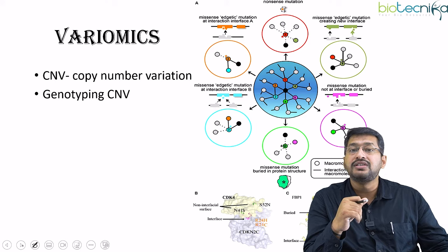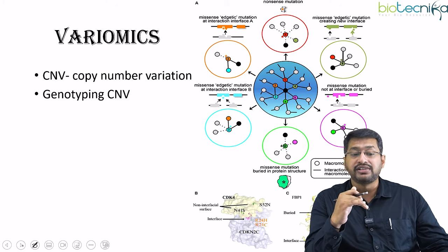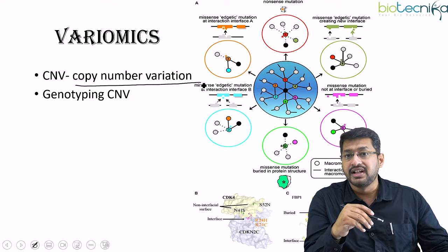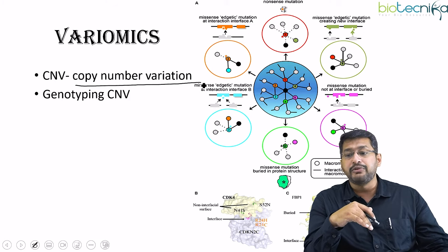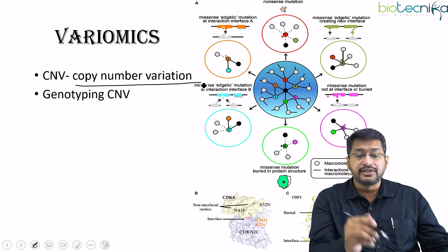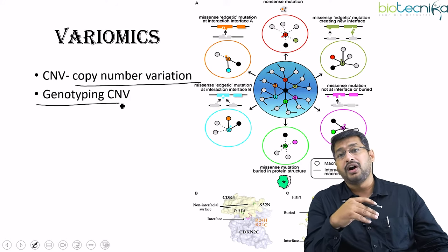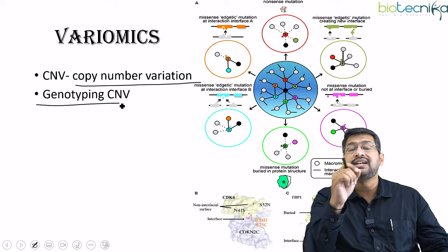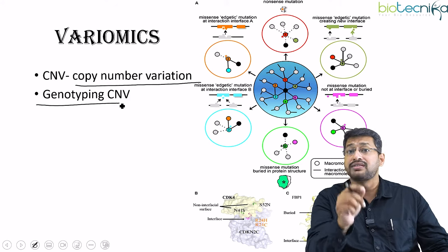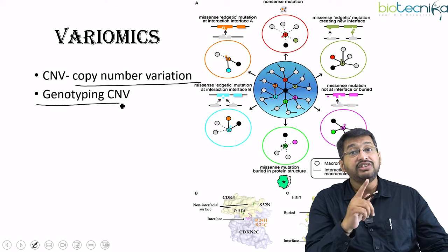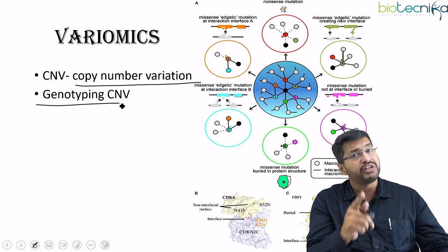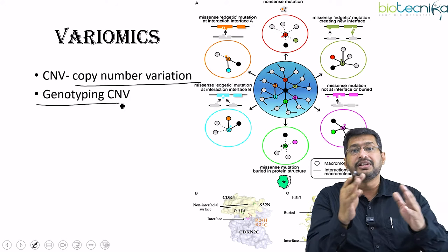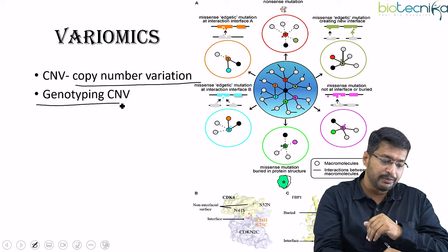The first new terminology is variomics. In variomics, we talk about copy number variations (CNVs), and also in genotyping, ribotyping, or serotyping, we look at variations at molecular and sub-molecular levels. These variations become very important in disease diagnosis and treatment, and this field comes under the umbrella called variomics.